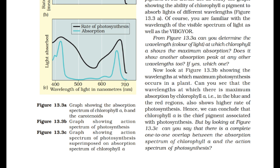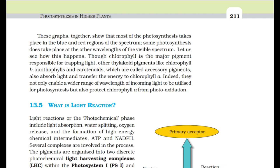Most of the photosynthesis takes place in the blue and red regions of the spectrum, though some photosynthesis does take place at other wavelengths. Other thylakoid pigments like chlorophyll B, xanthophylls, and carotenoids — called accessory pigments — also absorb light and transfer the energy to chlorophyll A. They not only enable a wider range of wavelengths to be utilized for photosynthesis, but also protect chlorophyll from photo-oxidation.